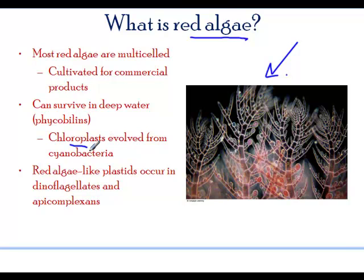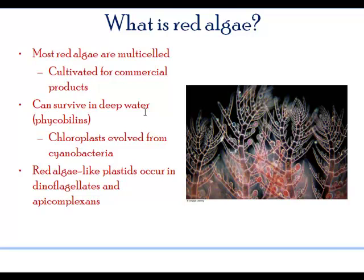The pigment is called carotenoids. These are usually present in very deep water — that is where you will find red algae.